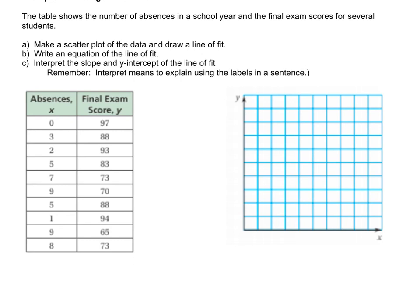So on the x-axis, which we're going to call the absences, let's go by ones. You can fill in the rest. And then over on the y-axis, which is the score, let's go by tens, and you can fill in the rest.